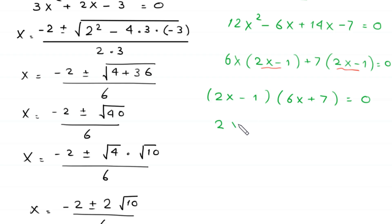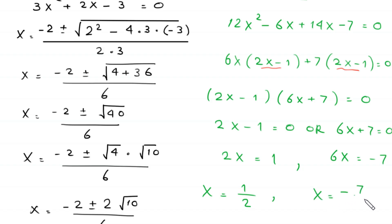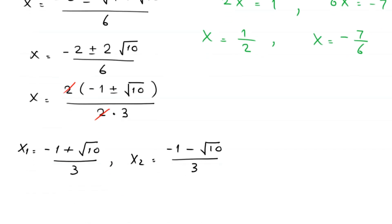Either 2x - 1 = 0 or 6x + 7 = 0. From the first equation, 2x = 1, so dividing both sides by 2 gives x = 1/2. From the second equation, 6x = negative 7, so dividing both sides by 6 gives x = negative 7/6.